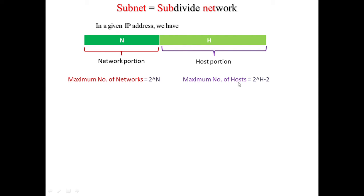The maximum number of hosts is equal to 2 raised to the power h minus 2. The bits in the host part of the IP address specify the number of hosts which can be assigned an IP address. This minus 2 accounts for the network address and the broadcast address — the two addresses which are not used for individual hosts within a network.